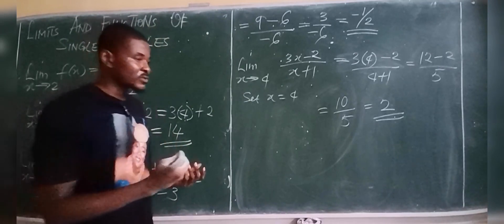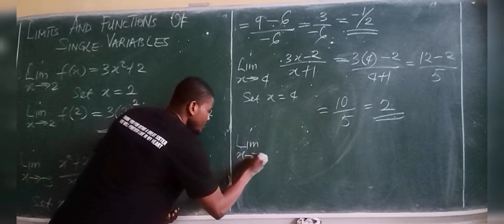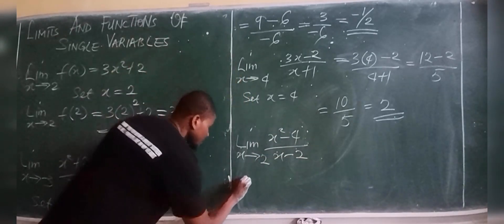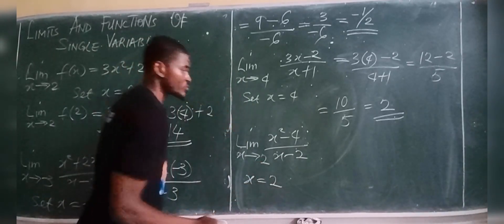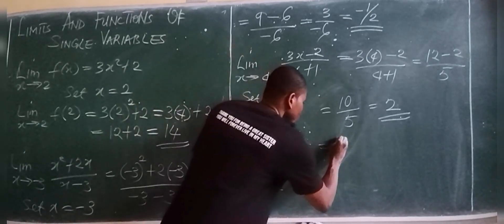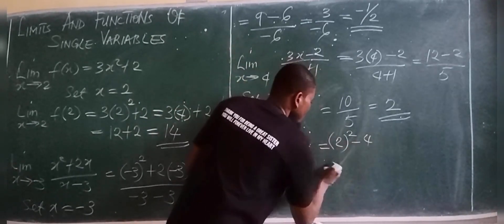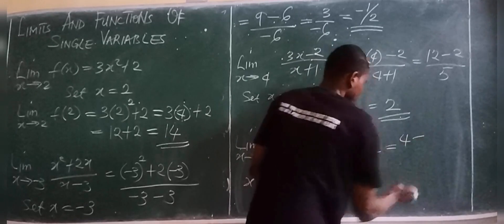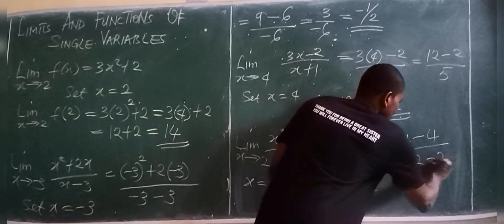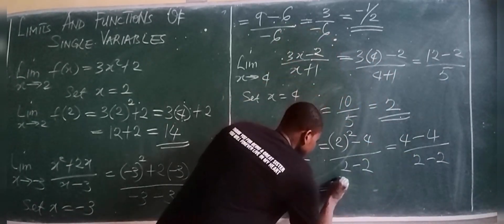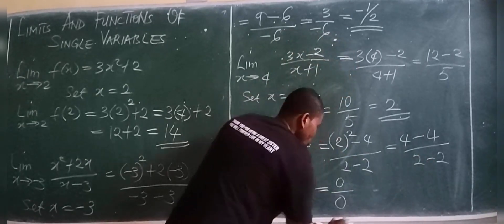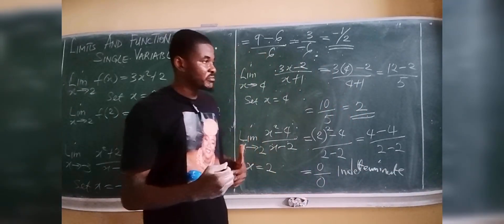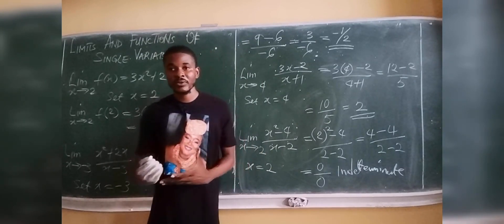Now consider the limit as x approaches 2 of (x² − 4) / (x − 2). Setting x = 2: the numerator becomes 2² − 4 = 4 − 4 = 0, and the denominator becomes 2 − 2 = 0. This gives 0/0, which is indeterminate. This means the limit has failed by direct substitution.